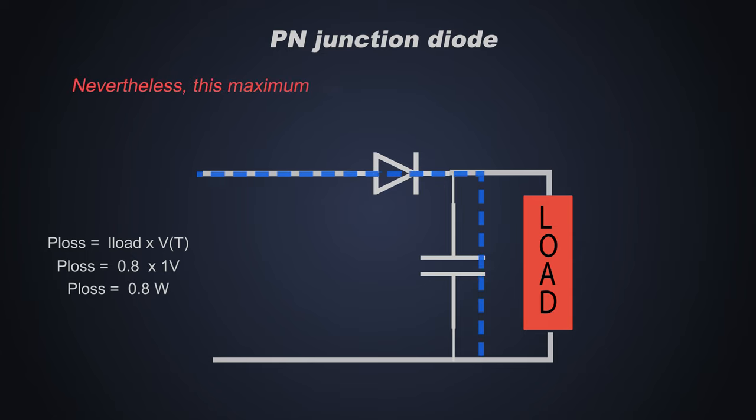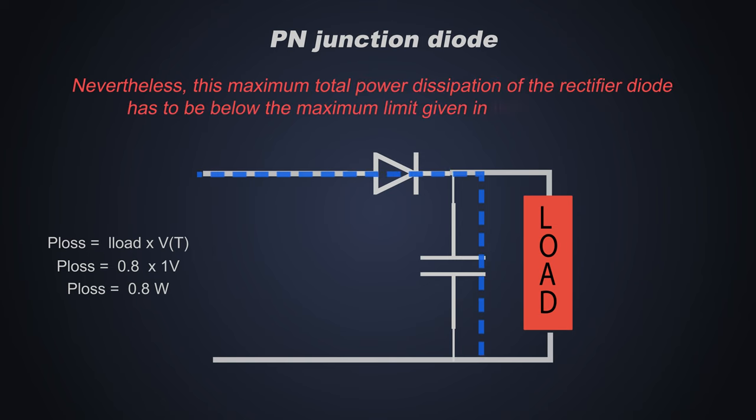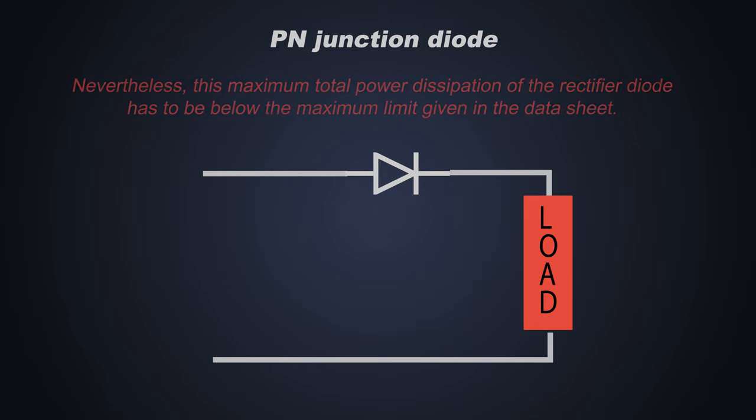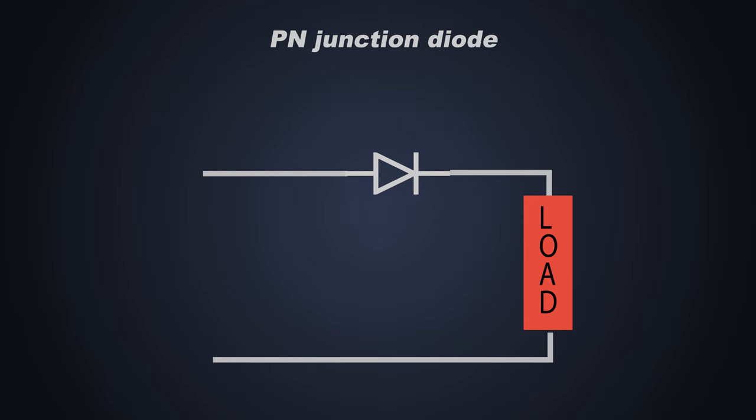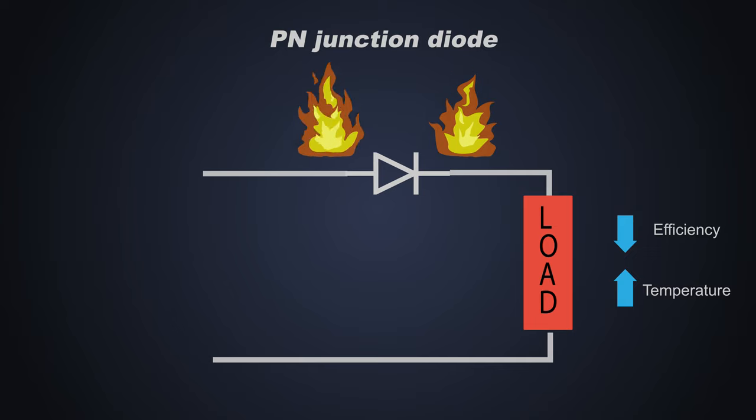Nevertheless, the maximum total power dissipation of the rectifier diode has to be below the maximum limit given in the datasheet. If you use this diode for high power applications, then the losses across this diode would be huge, which will decrease the efficiency of the circuit, increase the temperature of the diode and eventually it will fail.